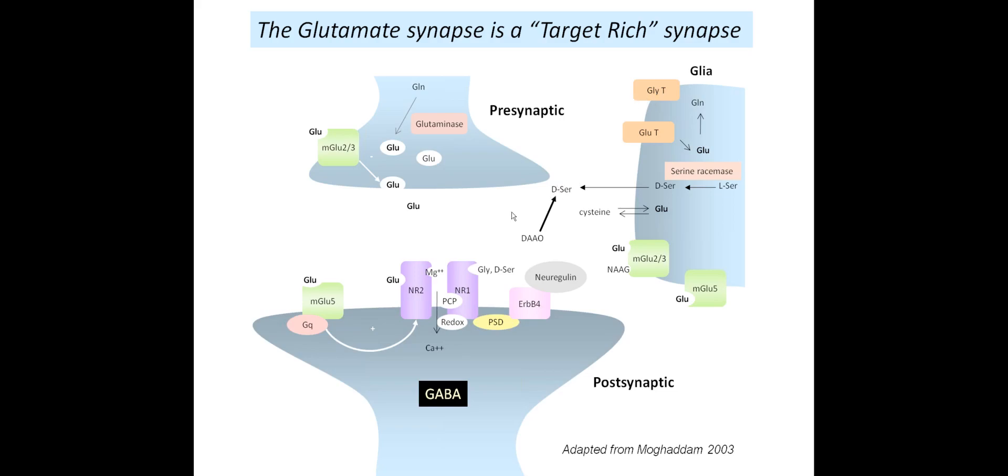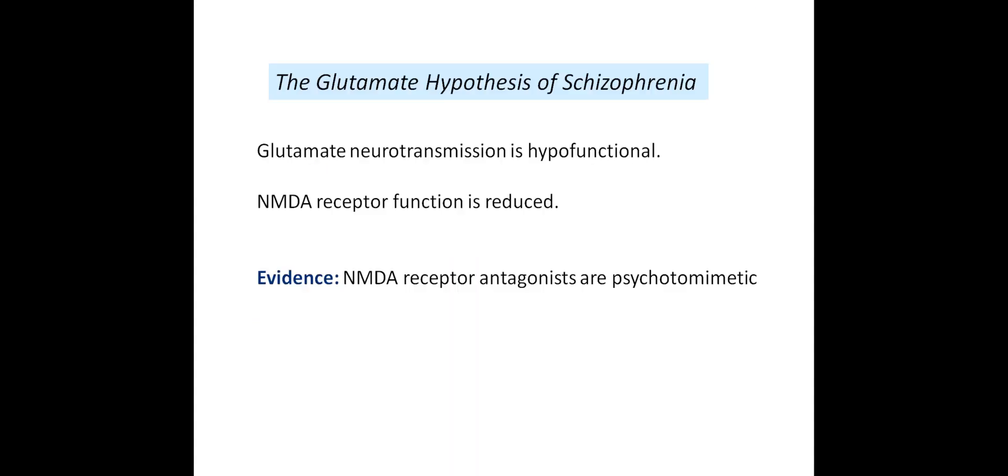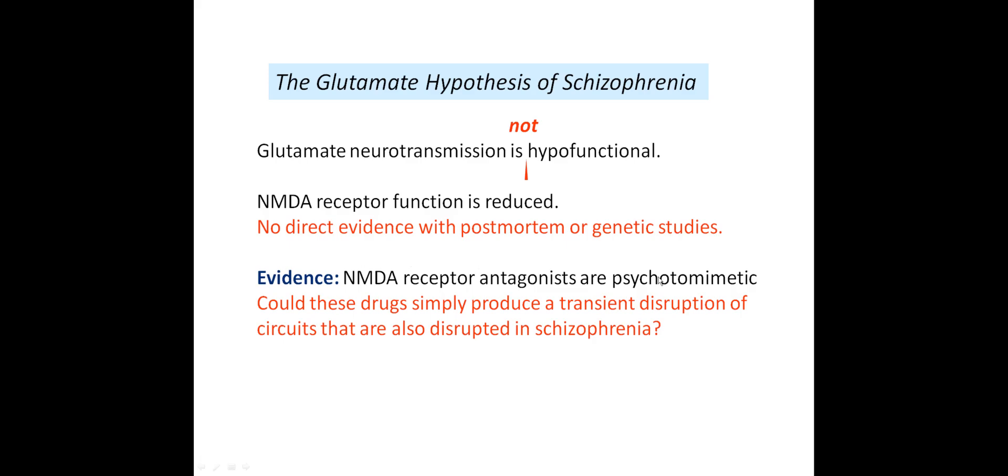An important thing about this hypothesis was that the glutamate synapse is what the military calls the target-rich synapse. There are a whole host of targets. This is an old slide showing a limited number of proteins that could influence the function of the synapse. You have the post-synaptic site that is primarily thought to be GABAergic, at least in the cortex, and so you have a number of proteins including mGluR5, different sites on the NMDA receptor, as well as a whole host of other targets that are connected to the NMDA receptor to post-synaptic density including ErbB4 and Neuregulin.